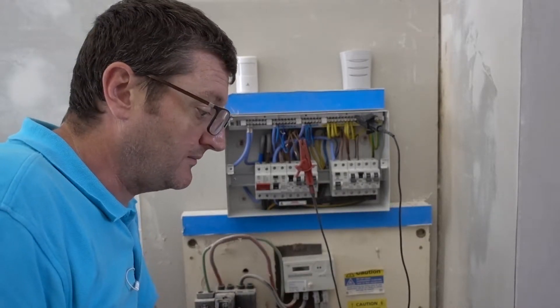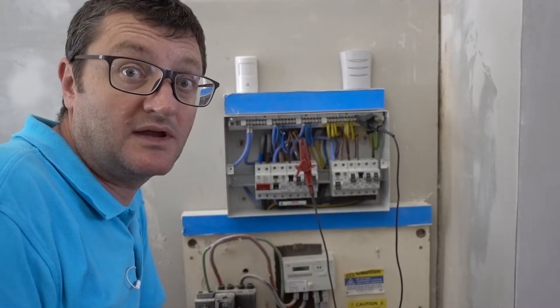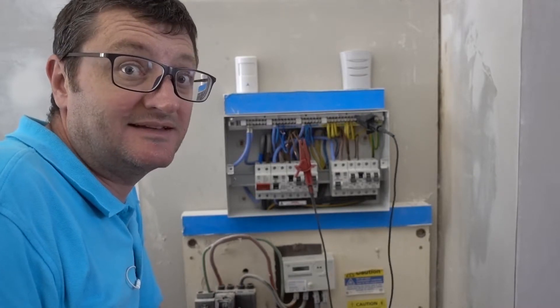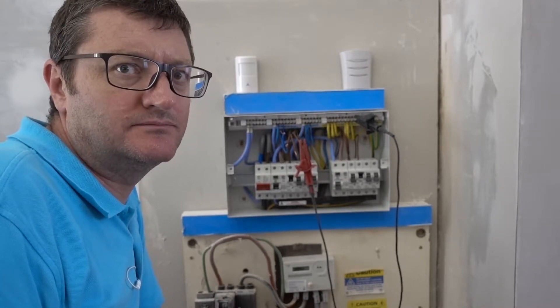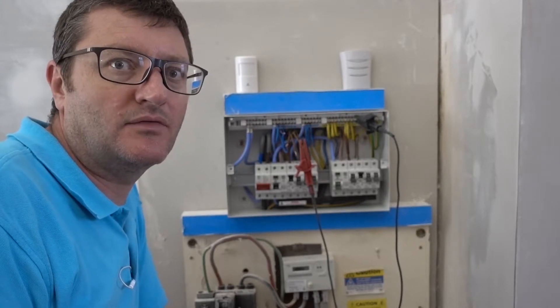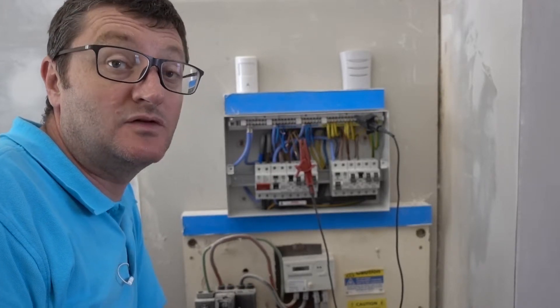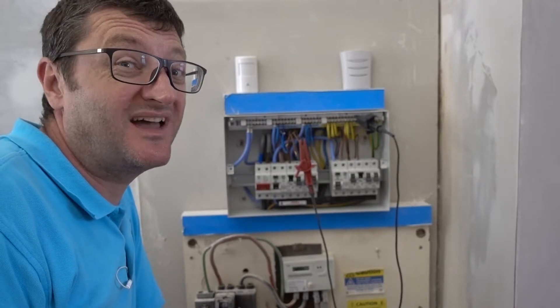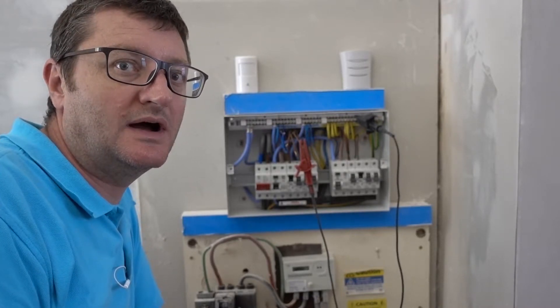It's anything over 1 mega ohm, according to the regs, is okay. Once you're getting a single figure, you want to be starting to wonder what might be wrong with your circuit. I had that nail through wire brought me down to 2 mega ohms, which the regs actually say is okay. But I wasn't happy with that. So I wanted to change the wire.